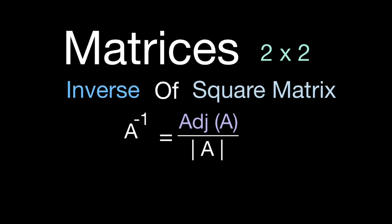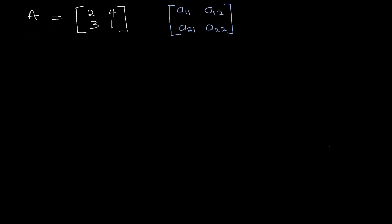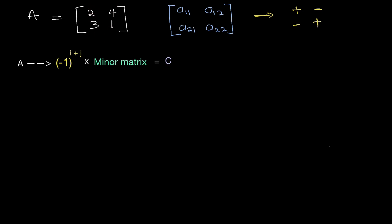To find the inverse of a 2x2 square matrix, we need to find the cofactor of matrix A. Each element has a position and a sign: a11 is plus 1, a12 is minus 1, a21 is minus 1, a22 is plus 1. We apply the sign times the minor matrix of each element to get the cofactor, then transpose the cofactor matrix.